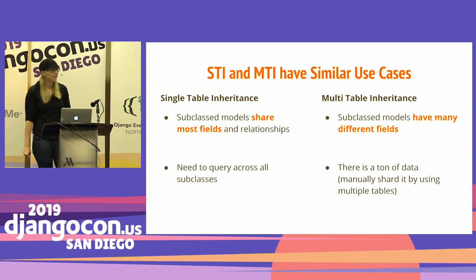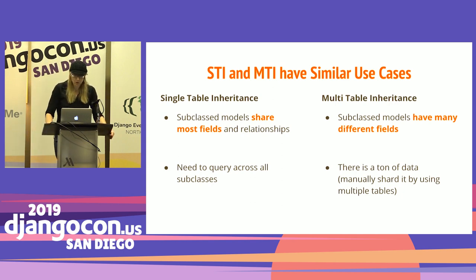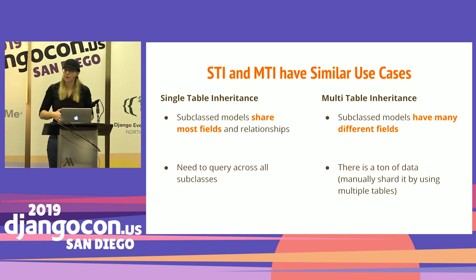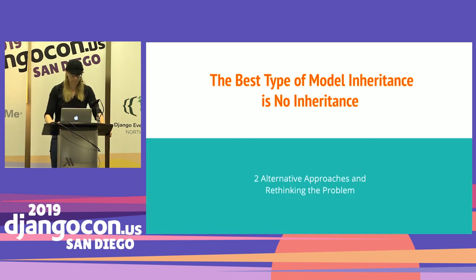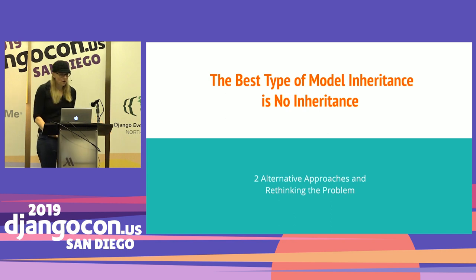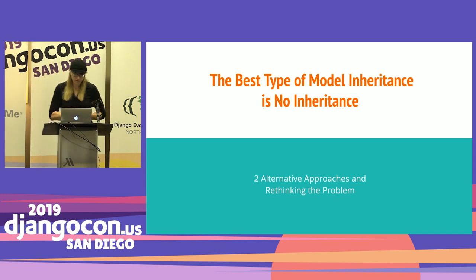The use cases for single table and multiple table inheritance are really similar — the shopping cart scenario works for both. The way to choose between them is to ask: do most of the subclasses share fields and functionality? If so and you want a performance boost, single table inheritance might be appropriate. If they're vastly different, then multiple table inheritance is preferable. Sometimes the best type of model inheritance is not to use inheritance at all, so we have alternative approaches and ways to rethink the problem.